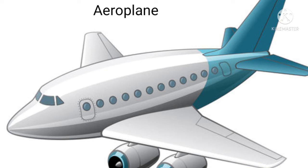Children, look here — what is this place called? This place is called the cockpit. The cockpit is where the pilot sits and controls the aeroplane. So who drives the aeroplane? The pilot drives the aeroplane!